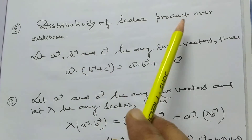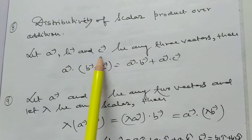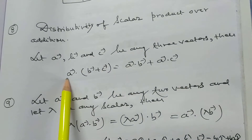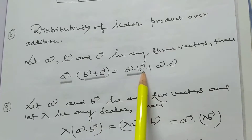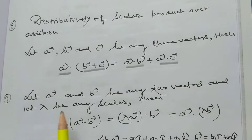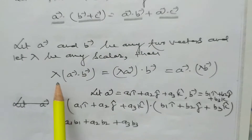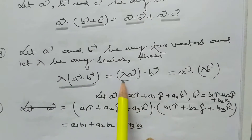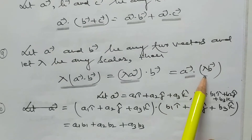Distributivity of scalar product over addition: let vector A, vector B, and vector C be any three vectors. Then vector A dot (vector B + vector C) equals vector A dot vector B plus vector A dot vector C. Also, if lambda is any scalar, then lambda times (vector A dot vector B) equals (lambda A) dot vector B equals vector A dot (lambda B).